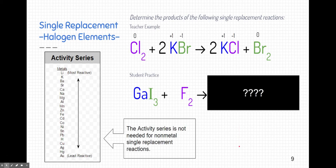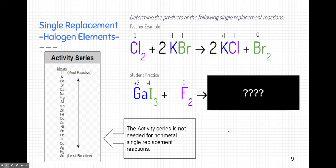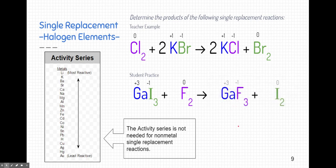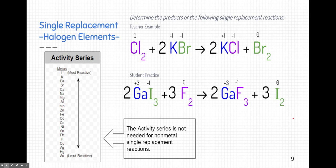Pause the video and try this student practice: gallium iodide and fluorine. They do single replace each other since we can ignore the activity series for halogens. Gallium is positive 3 and iodine is negative 1, which is why there's a subscript of 3 next to iodine. Fluorine in elemental form has no charge, but its predictable charge is negative 1 when it bonds. The products are gallium fluoride — positive 3 and negative 1 — and iodine goes off by itself. Since iodine is diatomic, we write a subscript of 2, then balance using coefficients to ensure equal numbers of each type of atom on both sides.